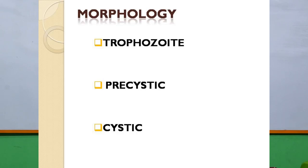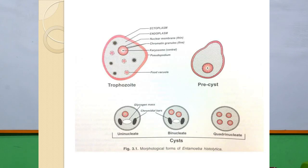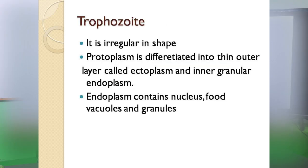Coming to the morphology of Entamoeba histolytica, this parasite occurs in three forms. The first form is the trophozoite form, the second form is the pre-cystic form, and the third form is the cystic form. We will go into deep details about each morphological form.